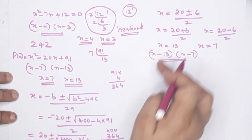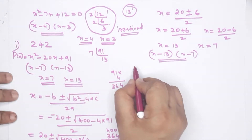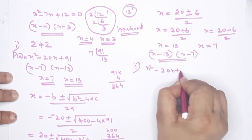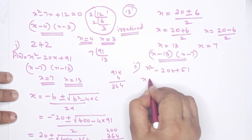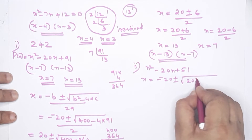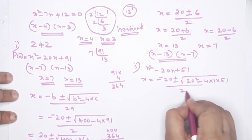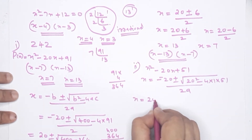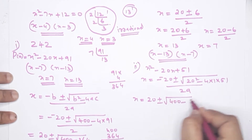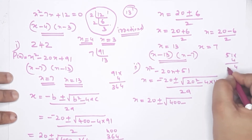Now the second question: x²-20x+51. Using x = (-b ± √(b²-4ac)) / 2a, we get x = (20 ± √(400 - 4×1×51)) / 2. This gives x = (20 ± √(400-204)) / 2 = (20 ± √196) / 2.